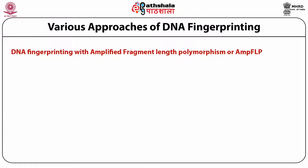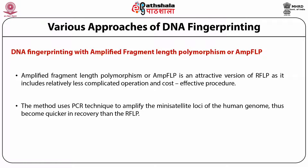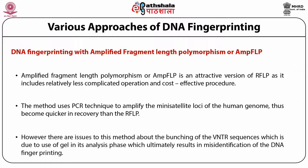Next, DNA fingerprinting with amplified fragment length polymorphism (AFLP). AFLP is an attractive version of RFLP as it includes relatively less complicated operation and a cost-effective procedure. The method uses PCR technique to amplify the mini-satellite loci of the human genome, thus becoming quicker in recovery than RFLP. However, there are issues with this method regarding bunching of VNTR sequences — variable number of tandem repeats — due to the use of gel in its analysis phase, which can result in misidentification of the DNA fingerprint.